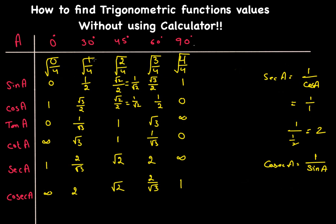To recap: write 0, 1, 2, 3, 4 — divide by 4 — take the square root to get sine values: 0, 1/2, √2/2, √3/2, 1. Flip them for cosine. Divide sine by cosine for tangent. Flip tangent for cotangent. For secant, take 1 over each cosine value.